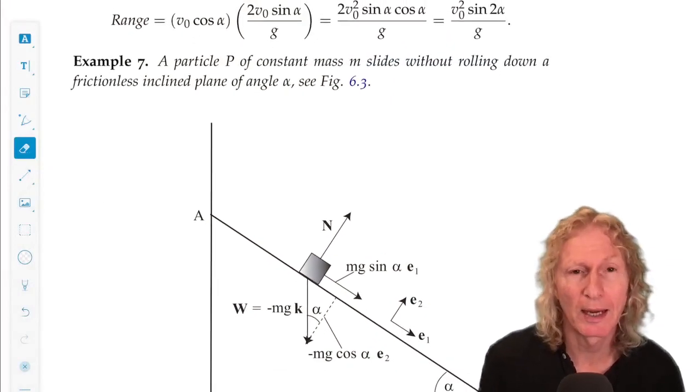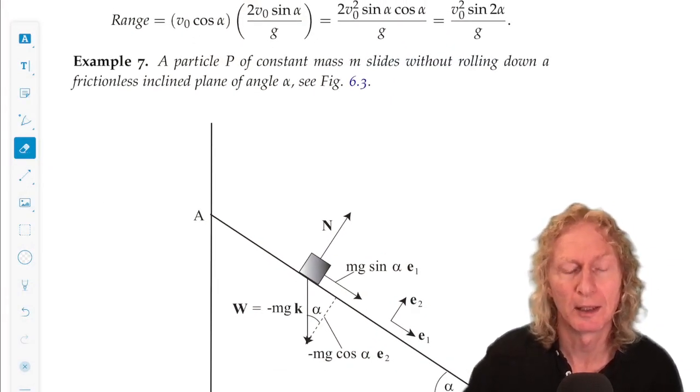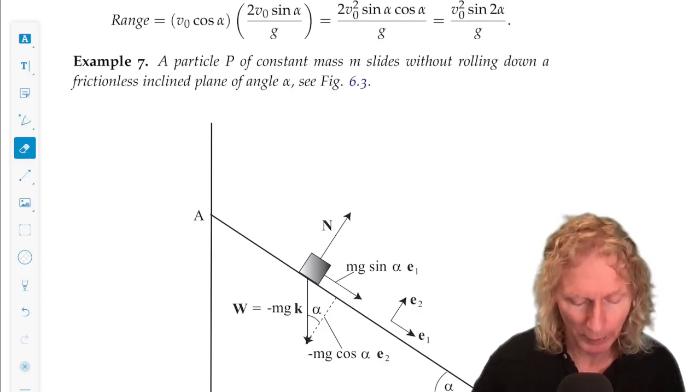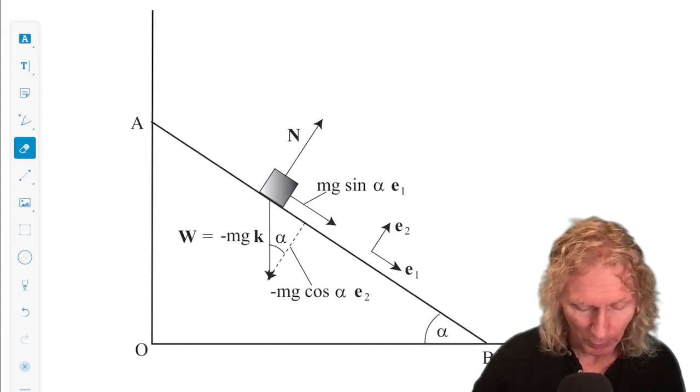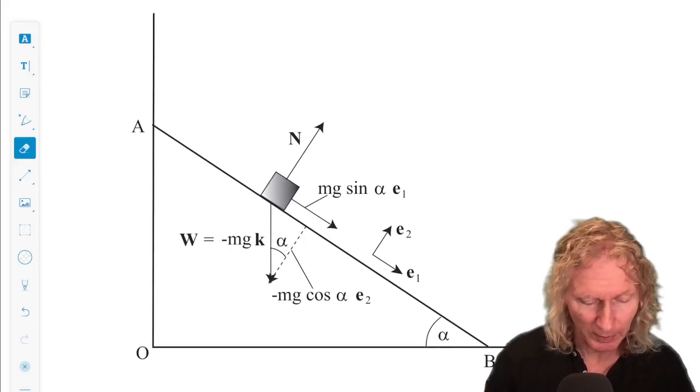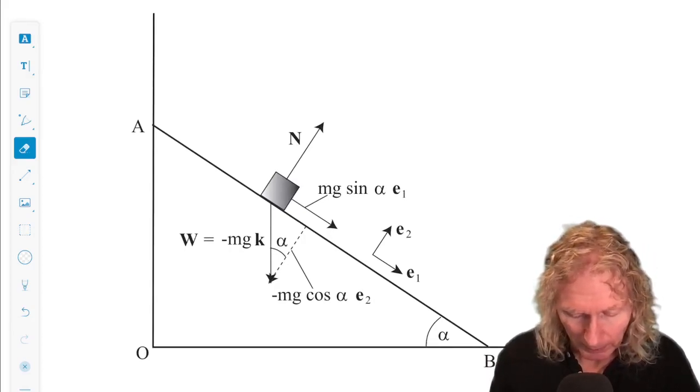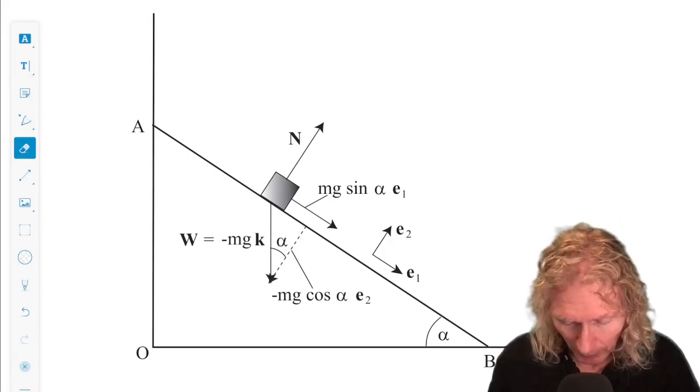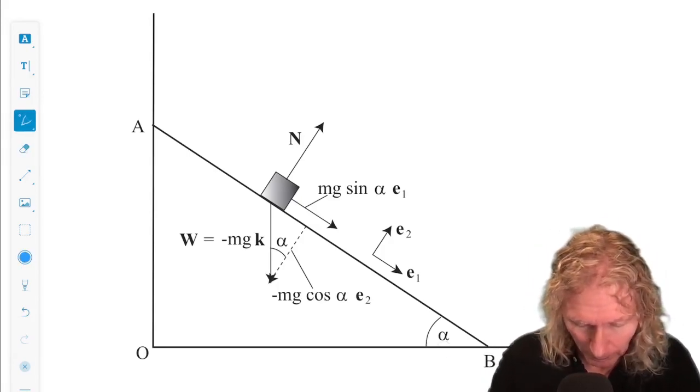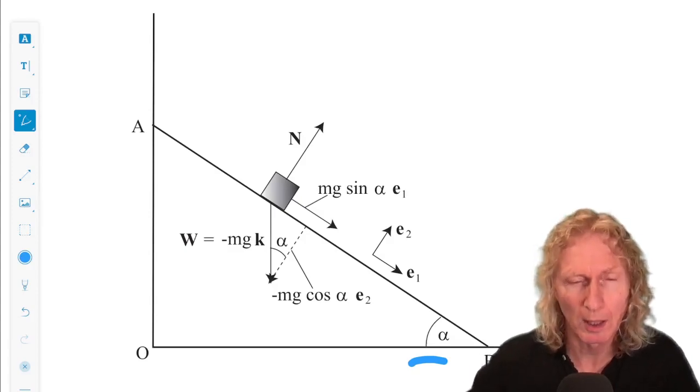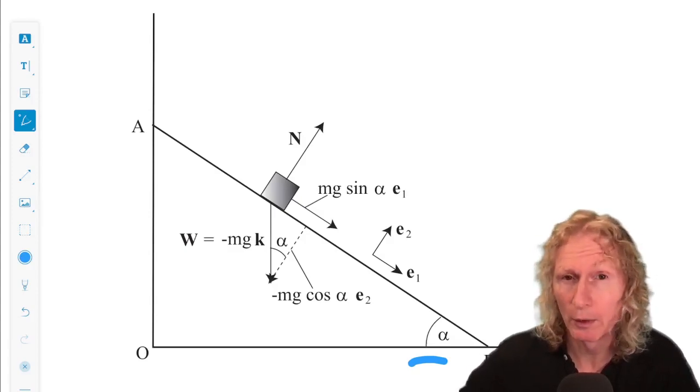This is a classic inclined plane problem with no friction. So here's our inclined plane. It's this line that's at an angle alpha with respect to the horizontal, and a ball or block slides down with no friction.